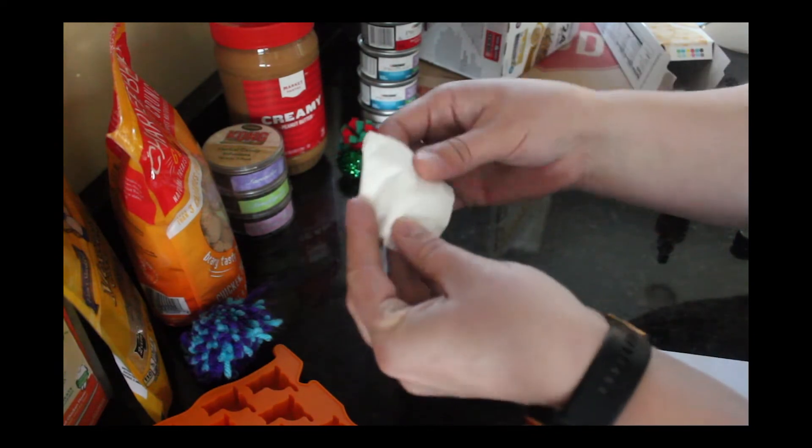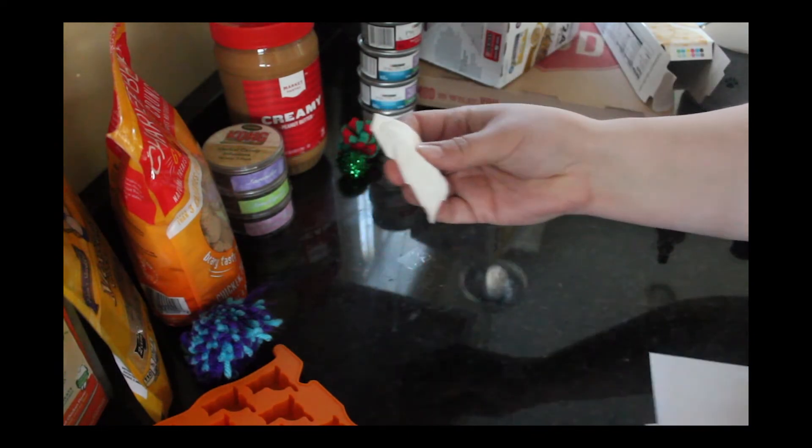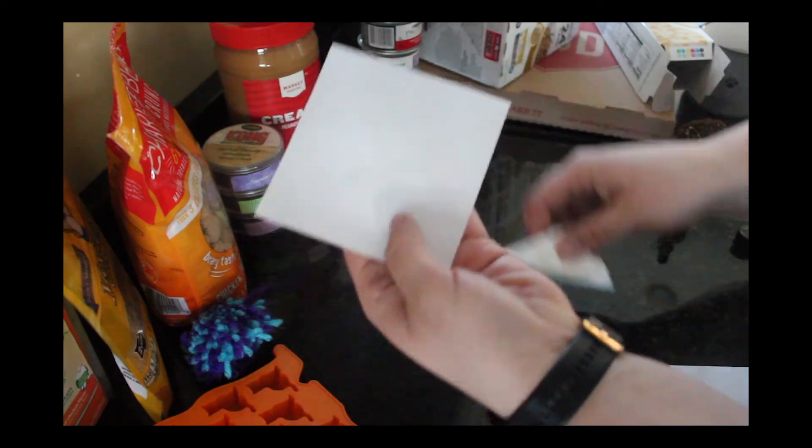Next, you're going to take the spot of your rag or Kleenex with that drop on it, and you're going to smear it on your paper.